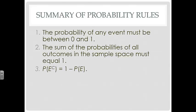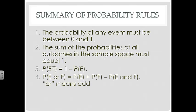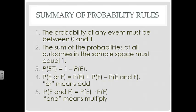Remember that the probability of the complement is equal to 1 minus the probability of the event. The probability of an event or another event means you're adding the probabilities of each of the events, and then you're subtracting the probability when both events occur. And then finally, your probability of one event and another event means you're multiplying the probability of one event times the probability of the other event.